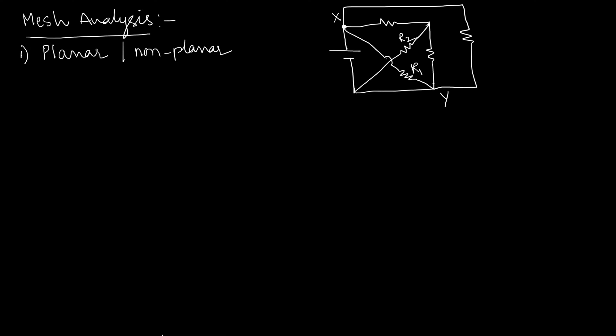I would say this is a planar network. We need to look for alternatives — R1 is connected between X and Y, so if we connect it differently, can we get a crossover? If we are not getting any crossover after checking all alternatives, then the network is treated as planar. I hope this point is clear for everyone.